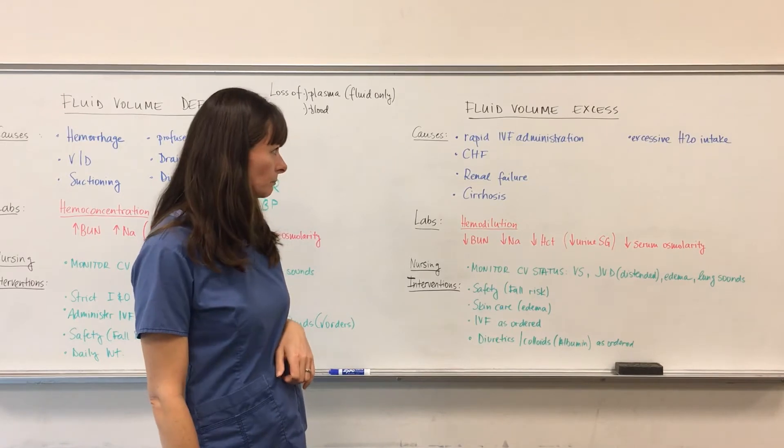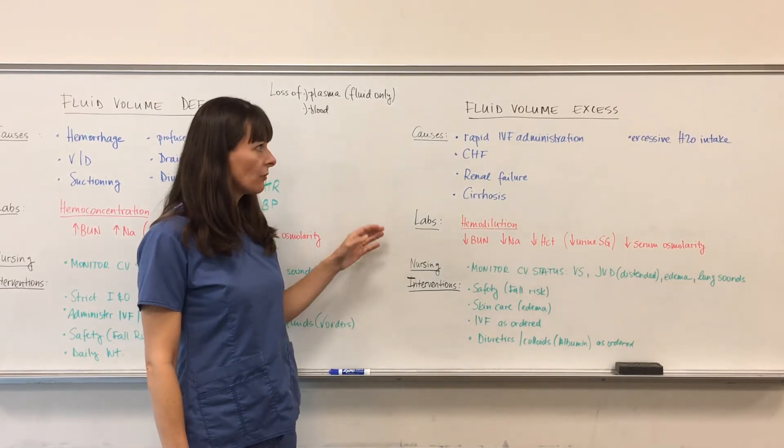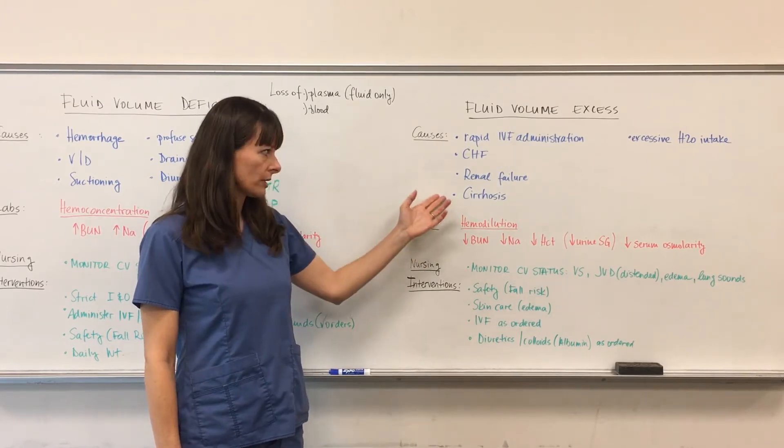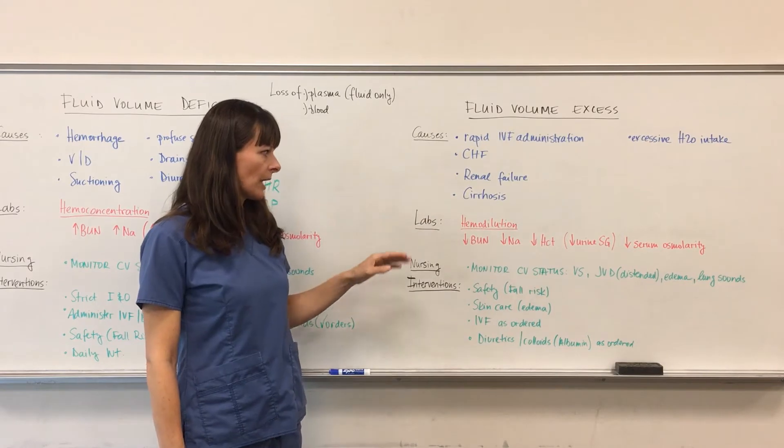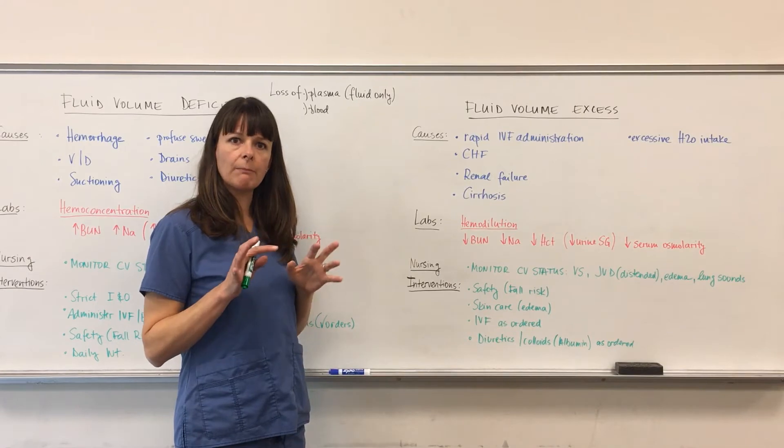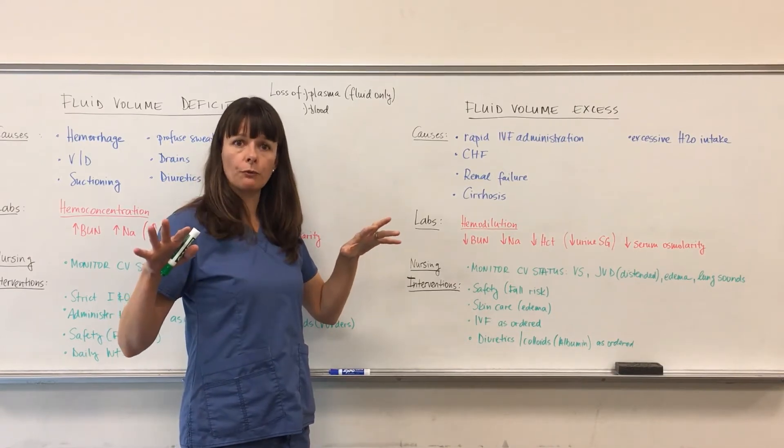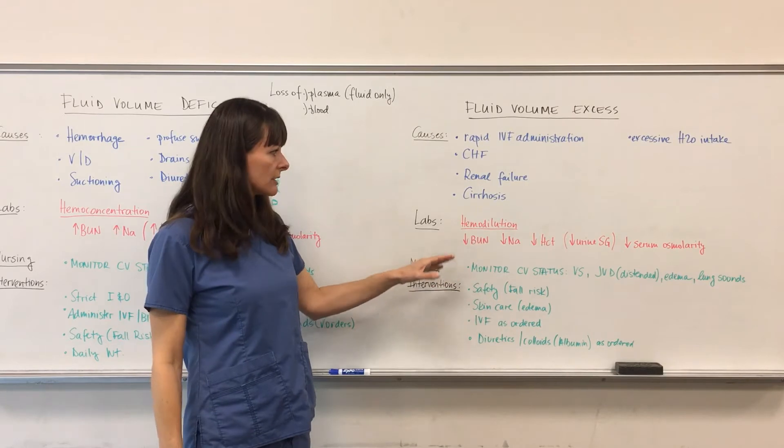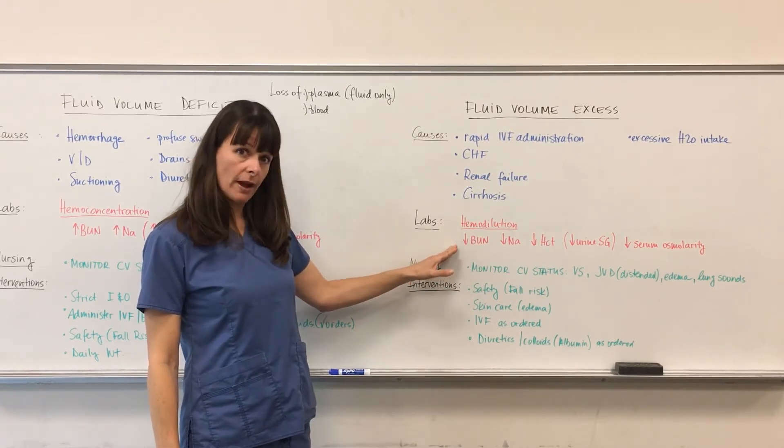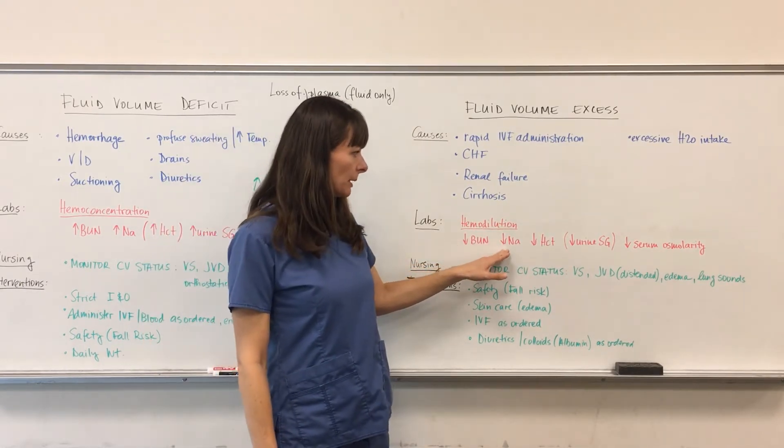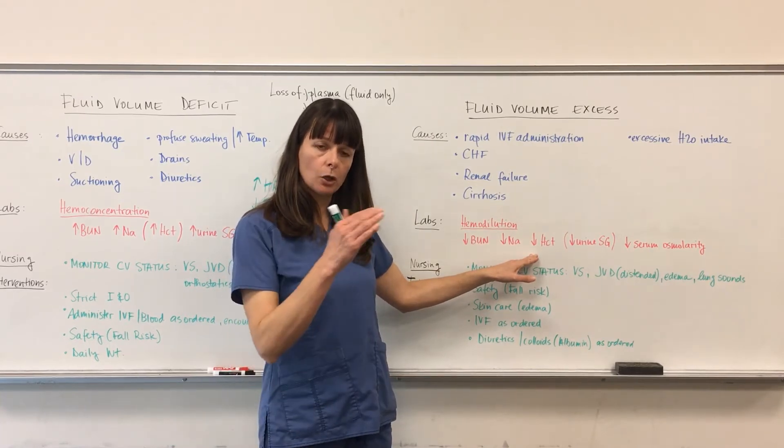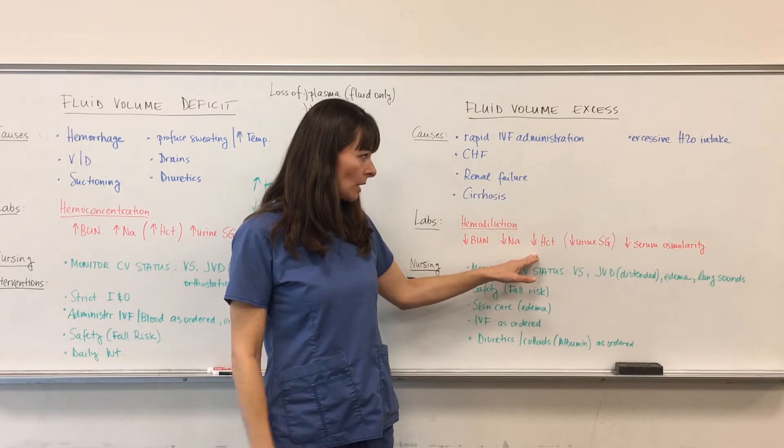So let's look at the lab values here. Now if we have fluid volume excess, too much fluid in the intravascular or in cirrhosis in the interstitial space, everything will be more diluted because all the particles that we have now that we can measure in the serum will be floating around in more fluid than they usually are. So everything will be more diluted, meaning that our BUN value will be low, our sodium level will typically be low, so will be the hematocrit.